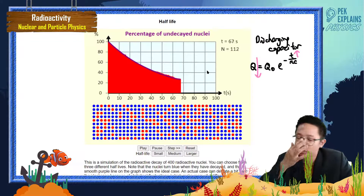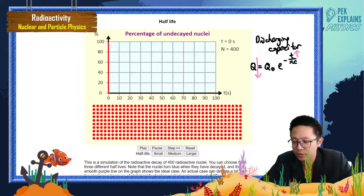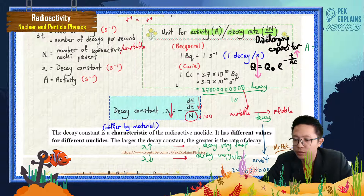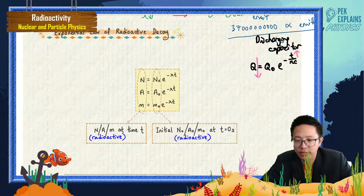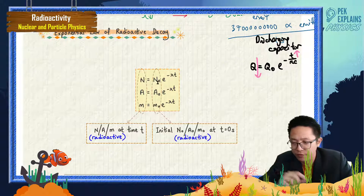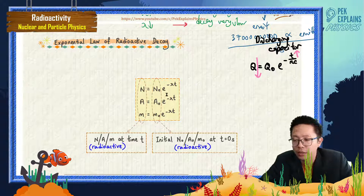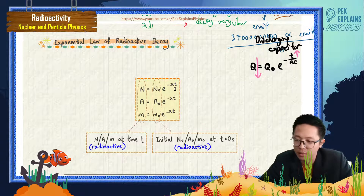The unstable nuclei also decrease over time — exponentially. So we have equations involving exponents for radioactivity as well. For radioactive decay, the exponential law is N equals N₀ times e to the negative lambda t. Compare this to the discharging capacitor: Q equals Q₀ times e to the negative t over RC. This one uses negative lambda t — it's almost the same.